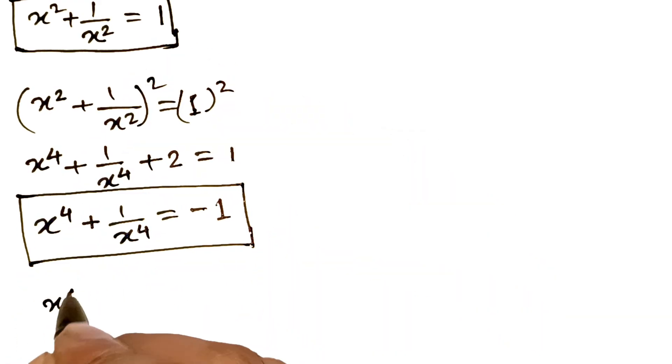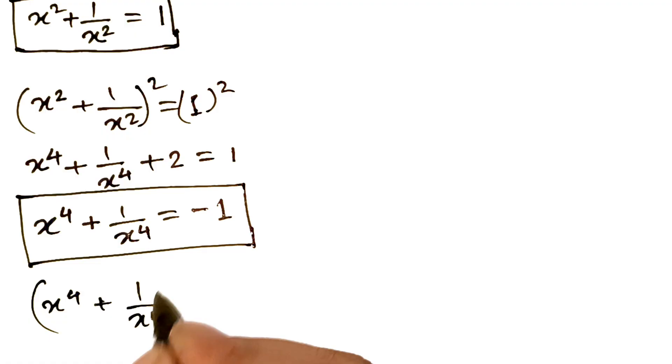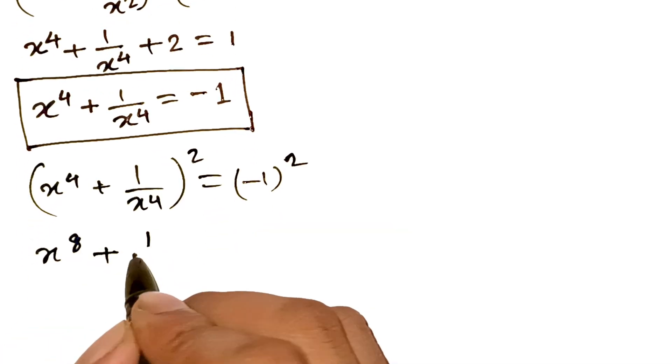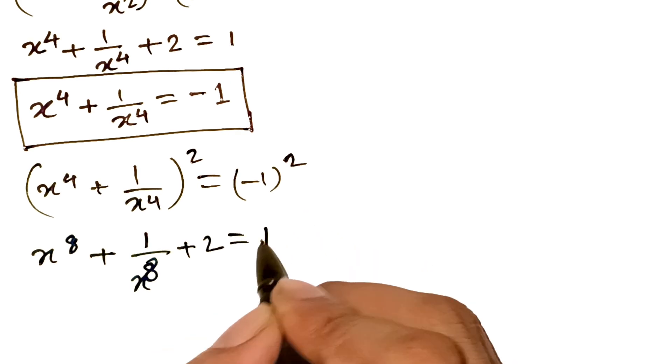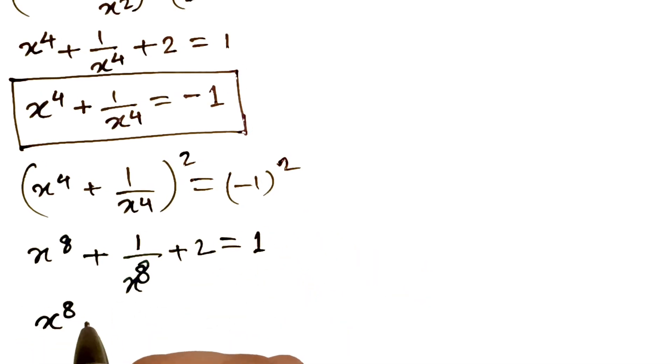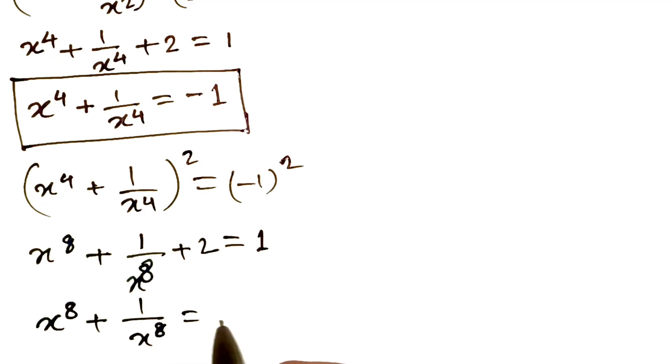Let's push it further. We square this result again. Left side becomes x to the power 8 plus 1 over x to the power 8 plus 2. Right side becomes 1 again. Subtract 2, and yep, x to the power 8 plus 1 over x to the power 8 equals minus 1.